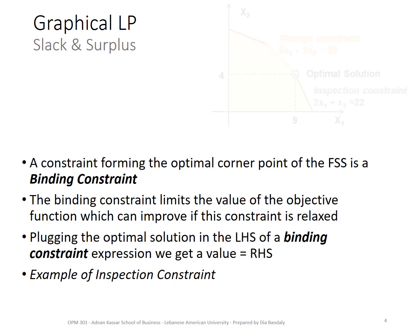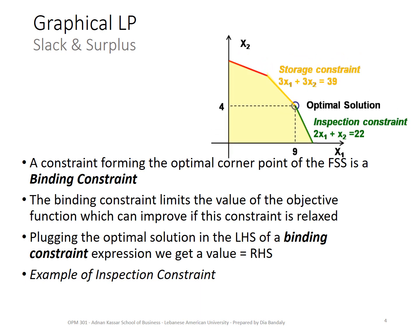Let's recall what we found in our previous problem. We found the optimal solution to be at the intersection between the yellow line and the green line, which represent the storage constraint and the inspection constraint. It's the intersection of this line and this line. The constraints represented by these lines are called binding constraints — this is a very important concept in linear programming.